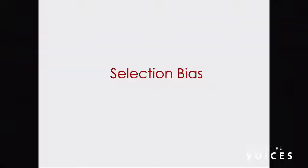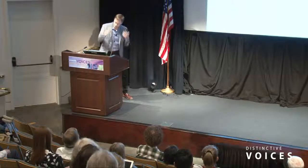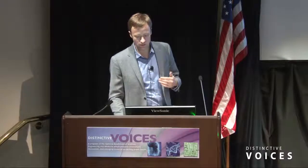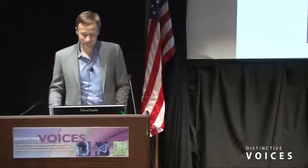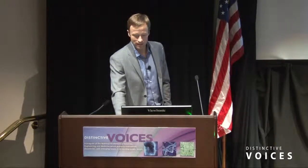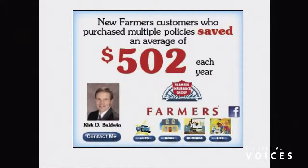There are great examples that convey selection bias. This was one of my favorites: 'Survival bias means that this app will get fantastic reviews — identifying any mushroom instantly with just a pic.' That's an example of selection bias because those that survive are the only ones that can do a review of the mushroom app. And my kids are starting to hear commercials. You see: 'Progressive switching saves you over $500 on average,' 'New Farmers customers who purchase multiple policies saved on average about $500,' 'Geico — new customers reported an average savings over $500.' What is it about $500? And if you go to Allstate — drivers who switch saved about $498. Maybe Allstate is actually being more honest. How can every insurance company be about $500 cheaper than its competitors?